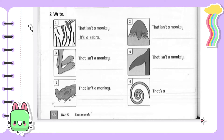In exercise two, you have six pictures with six animals, and you write sentences guessing which animal it is. For example, picture one — you see an animal that is black and white. What animal is it? It's a zebra. Write: 'It's a zebra.' That's example number one.